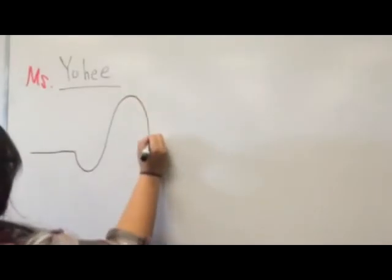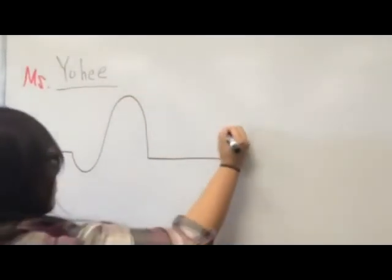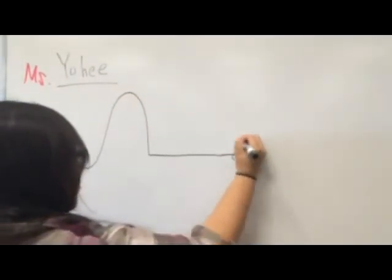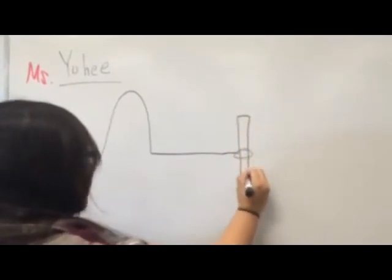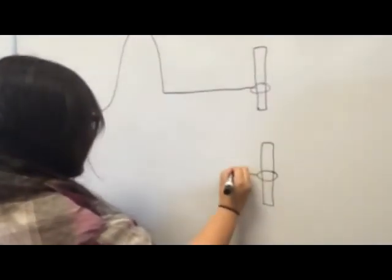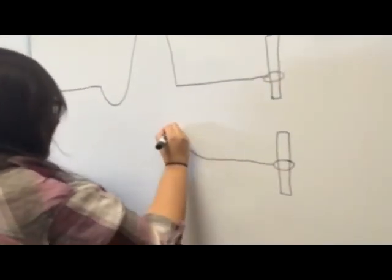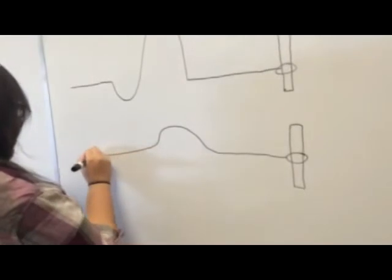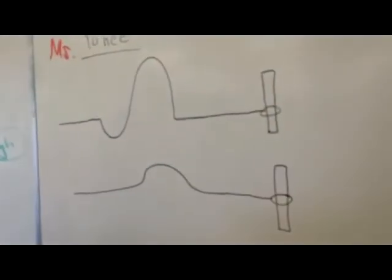This time we had the slinky and the wave going into a loose end. Once the slinky hit the loose end, it bounced back. And due to the loss of energy through friction, the amplitude was decreased.